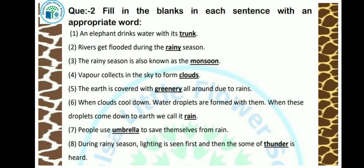People use umbrellas to save themselves from rain — answer: umbrella. During rainy season, lightning is seen first and then the sound of thunder is heard. When it rains, we first see lightning and then hear thunder — answer: thunder.